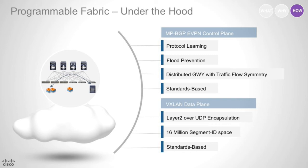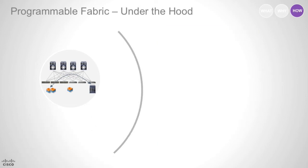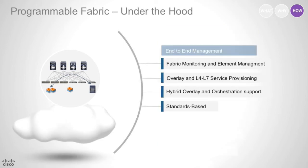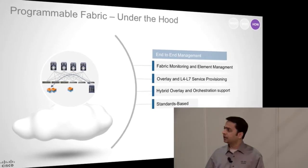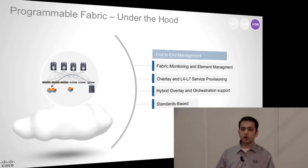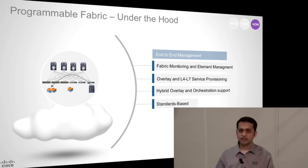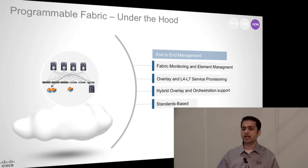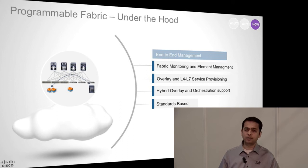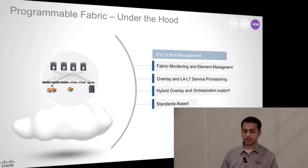Cisco goes one step beyond by providing you end-to-end management, which gives you fabric monitoring and element management. It allows you overlay and L4 to L7 services provisioning. And very importantly, it also gives you hybrid overlay support, which allows you to integrate your overlay software VTEPs as well as hardware VTEPs that could be available on your hypervisors or on your switches. And this, really in a nutshell, is how Programmable Fabric does it.